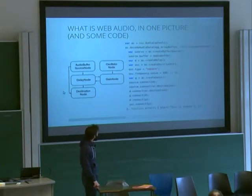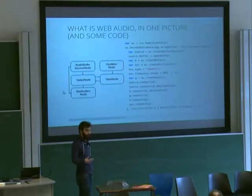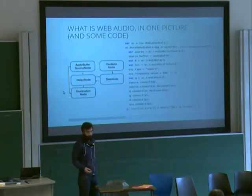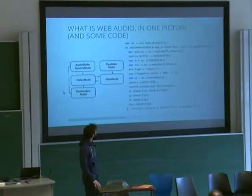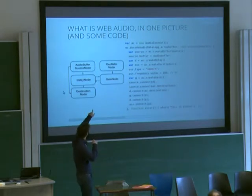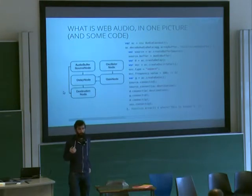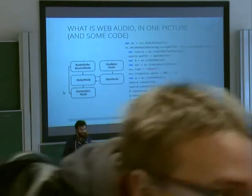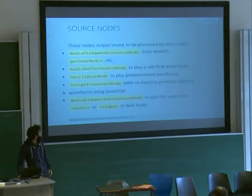Here's how to decode an OGG file — you get it from XHR or wherever, call decodeAudioData, it does the magic and gives you a buffer back via callback asynchronously on another thread, so it doesn't kill your performance. Then you create a BufferSource, put the buffer in, connect and set parameters, and you end up with the graph. Call start() and it outputs sound — it goes through the delay node, into the gain node, back into the delay node as a feedback loop, and eventually reaches the destination node where you hear sound.